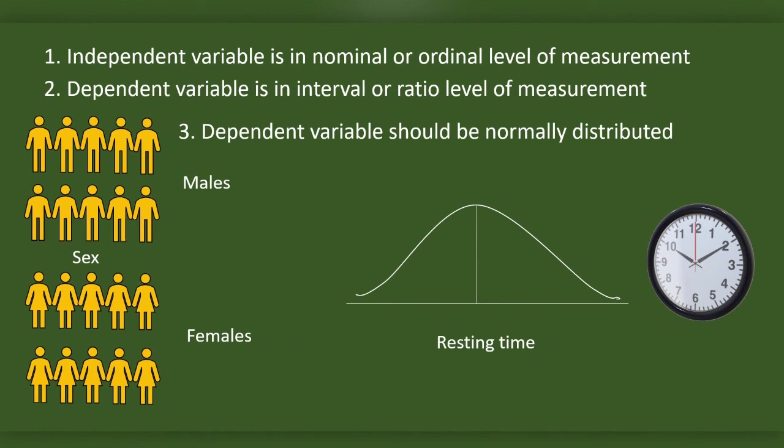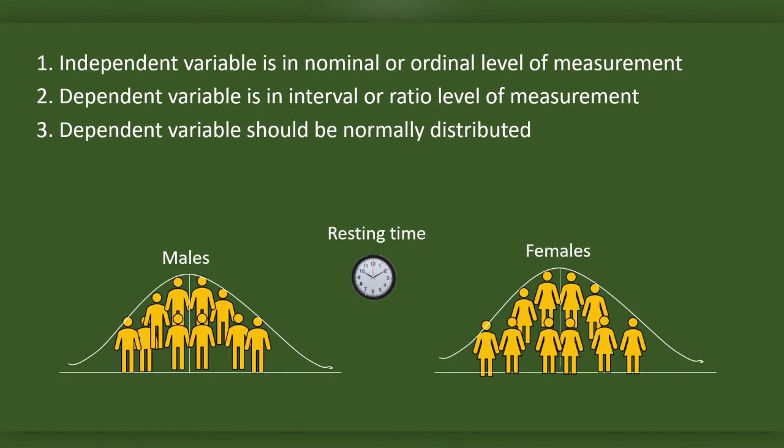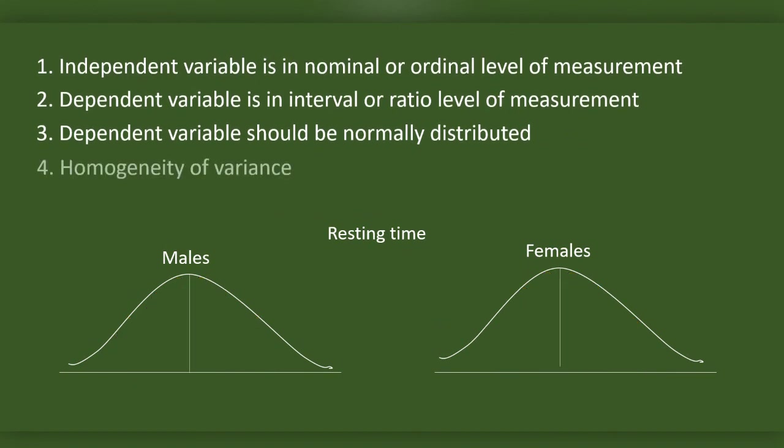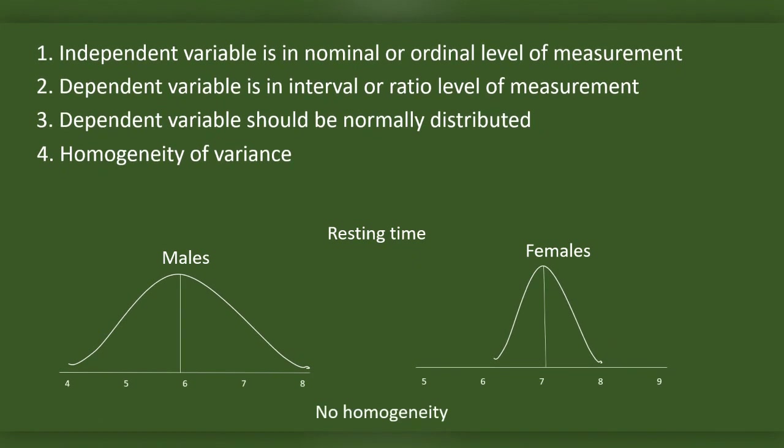The dependent variable has to be normally distributed. We will categorize dependent variable scores based on the independent variable. There are two categories here: the resting time of males and resting time of females. Scores of the dependent variable in each of these two categories should have homogeneity in variance. In other words, it should not be like this.